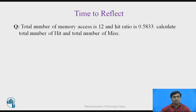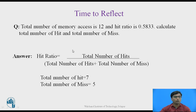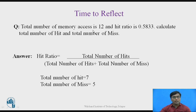This is time to reflect. The question: the total number of memory accesses is 12 and the hit ratio is 0.5833. We need to calculate the total number of hits and total number of misses. Using the formula, Hit Ratio = total hits divided by total hits plus total misses, and total memory accesses = 12. So, 0.583 = total hits divided by 12. Total hits = 12 × 0.583 = 7, and total misses = 5. This is simple mathematics.